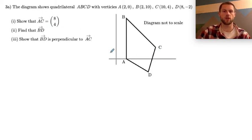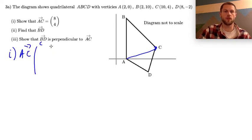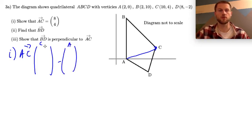Let's start off by showing that the vector AC is equal to (8,4). So to do that, to find vector AC we have to take the position vector of C and subtract the position vector of A. Think about subtracting the endpoint by the beginning point.